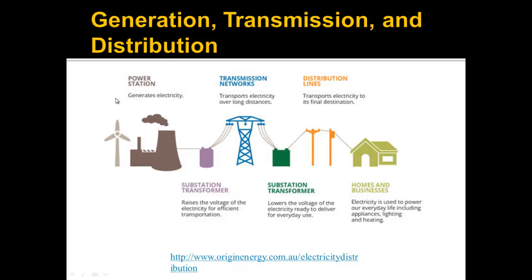So those are the main three things: the generation at the power station, the transmission which carries electricity over long distances, and the distribution which covers short distances.